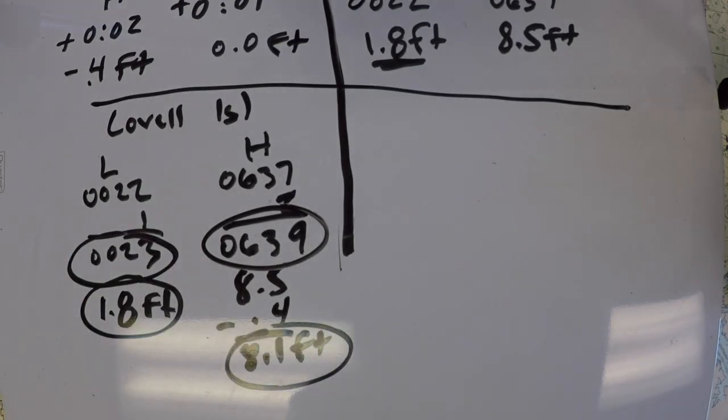And anytime you're using table three, you need certain pieces of information. You need the duration of rise and fall.